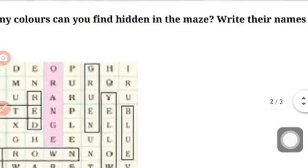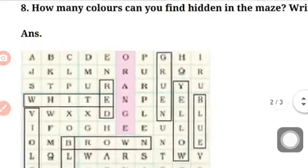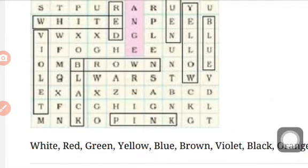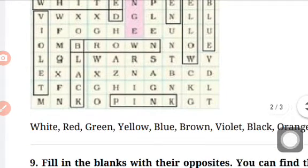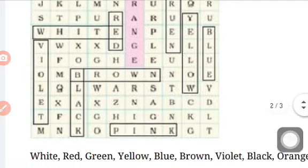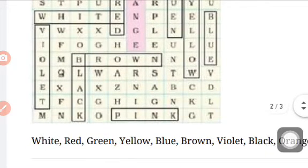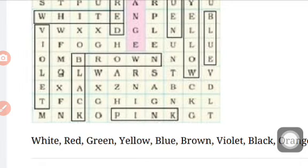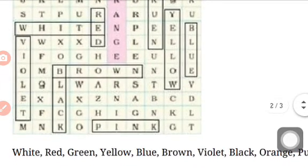Then number eight is, how many colors can you find hidden in the maze? Write their names below. You have to find colors in this box. Like it says, first color is white. W-H-I-T-E, white. After it, red. R-E-D, red. Green. G-R-E-E-N, green. Yellow. Y-E-L-L-O-W, yellow.